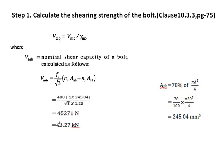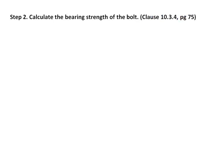Placing all values: fu for grade 4.6 bolt is 400 MPa, n (number of shear planes) is 1 for a lap joint, and γmb is taken from Table 5 of IS 800. This gives us the shearing strength Vdsb. The next step is to calculate the bearing strength of the bolt, as per clause 10.2.4, page 75 of IS 800.